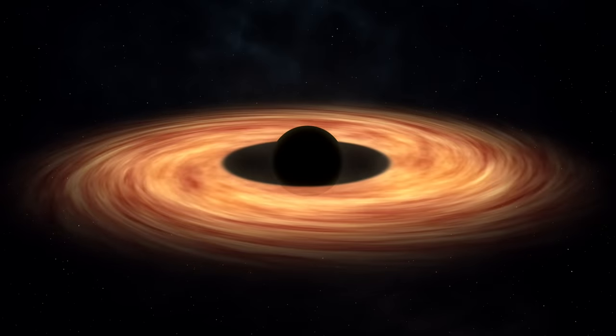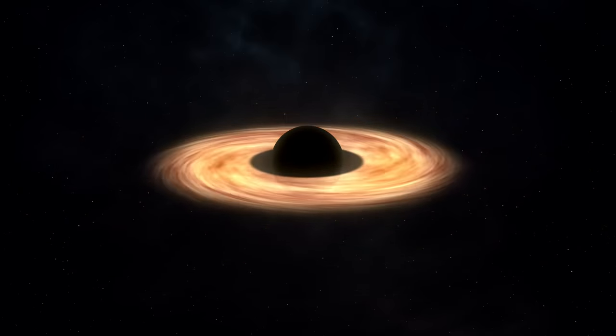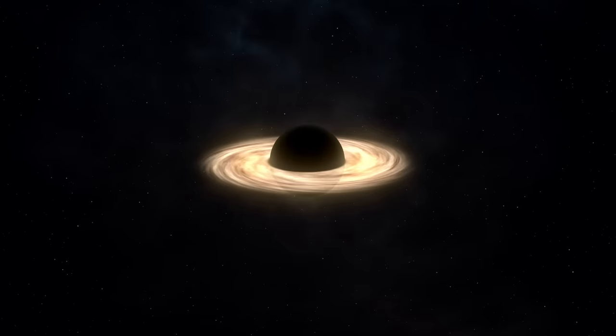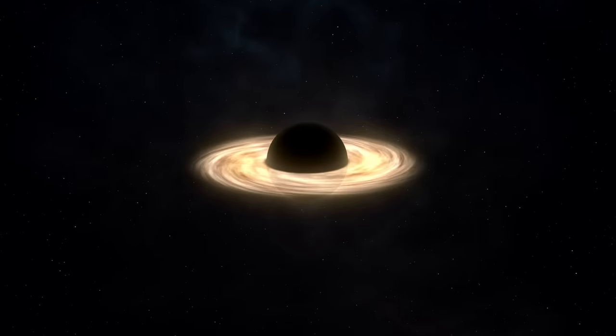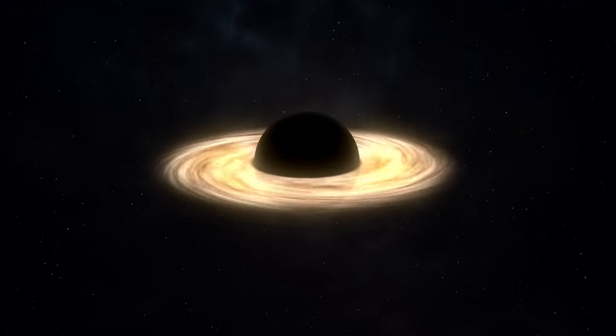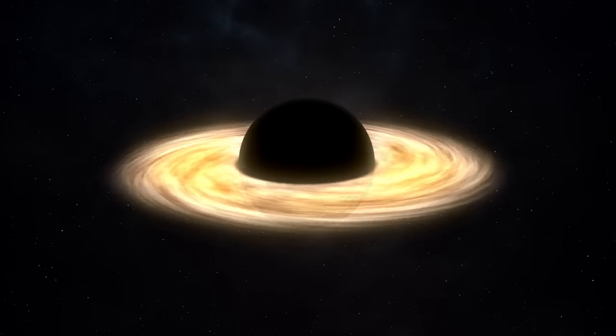What's useful for our purposes is that R-ISCO depends on the spin of the black hole. The faster it's spinning, the smaller R-ISCO becomes, assuming it's spinning in the same direction as the matter in the accretion disc. The rotation enables particles to orbit closer to the black hole than they'd be able to for a non-spinning black hole. So, you can kind of think of it as though the spin is supporting the particles against the relentless pull of gravity.